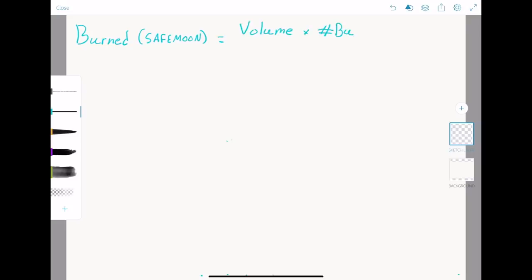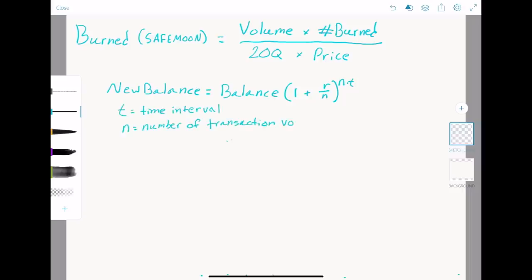If any of you recall from high school, even if you don't, I'll tell you, the equation for compounding interest can be calculated as follows. The new balance is equal to your previous balance multiplied by 1 plus the rate divided by n raised to the nt, where n is the number of times your amount compounds per unit t, and we are evaluating t in days, so n would be the number of transactions that occur per day. But we're going to be using 24-hour volume in our equation, so n becomes 1. So our equation for our compounding burn then becomes new burn equals the current burn times 1 plus rate raised to the t.